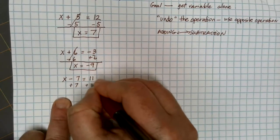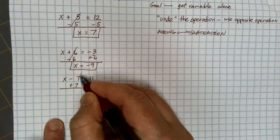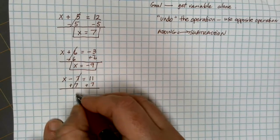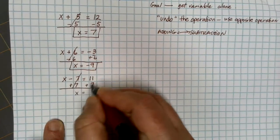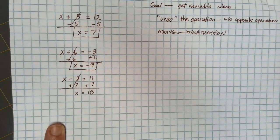7 is being subtracted, so to get rid of the 7 that's being subtracted, I'm going to add 7 to each side. Subtracting 7 and adding 7 undo each other. Leave me just with the x behind. And 11 plus 7 is equal to 18.